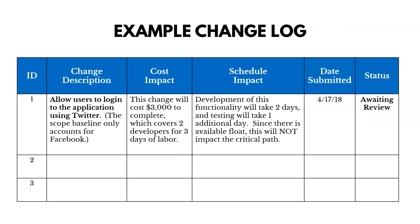As we conduct change management, we're going to be tracking changes in a change log. What you need to track is the description of the change, when it was submitted, who submitted it, when it was reviewed, if it got approved or not, the status, and any additional comments. We need to track changes, monitor them, and make sure we're communicating decisions — especially to affected stakeholders, and even more so to the stakeholders who requested them.